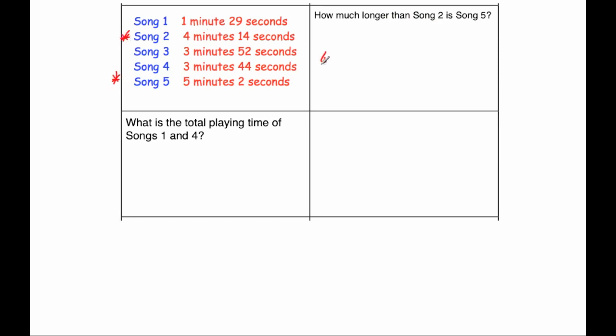Song 2 is 4 minutes and 14 seconds, and we want to see how much longer it takes to get to 5 minutes and 2 seconds. First, I'm going to go to 5 minutes. To get from 14 seconds to 5 minutes, because there's 60 seconds in a minute, that would be another 46 seconds. Then to get from 5 minutes to 5 minutes and 2 seconds, we need another 2 seconds. So altogether, that's 46 seconds and another 2 seconds, which equals 48 seconds.